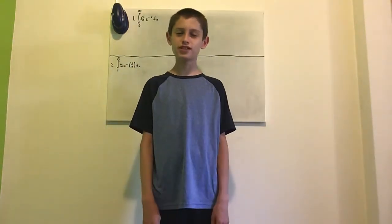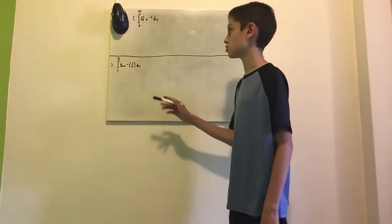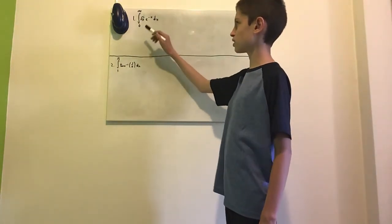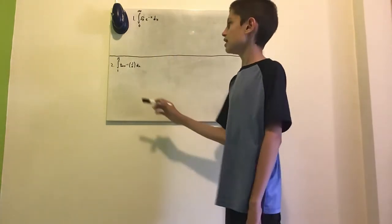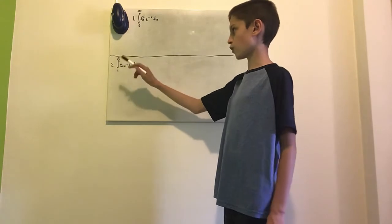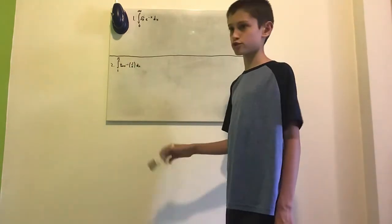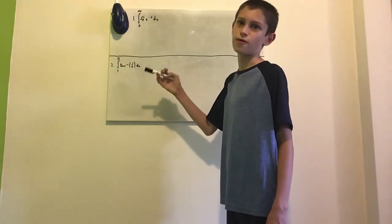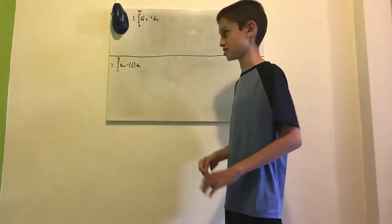Hi everyone, welcome to this video. Today I would like to take a look at two integrals that I found somewhere on the internet. First we have the improper integral from 0 to infinity of the square root of x times e to the minus x with respect to x, and we have the integral from 1 to the square root of 3 of the inverse tangent of 1 over x with respect to x. I would like to start with the first integral.